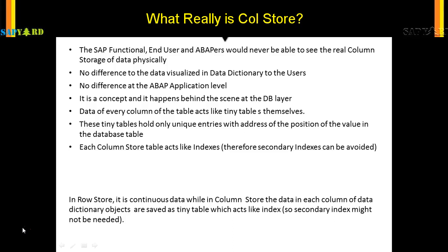After going through numerous blogs and tutorials, I was finally enlightened. Column store is just a concept and it happens behind the scenes at the database level. We cannot see it, but each column of the table acts like a tiny table itself. So they act like indexes, and therefore secondary indexes can be avoided in HANA database.